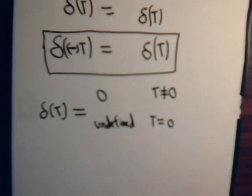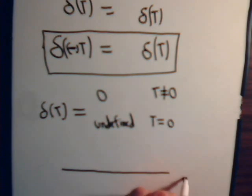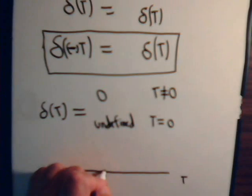So, the closest that we can try to have a graphical representation, if this is the t-axis, then when t equals 0, you'd have like a spike.